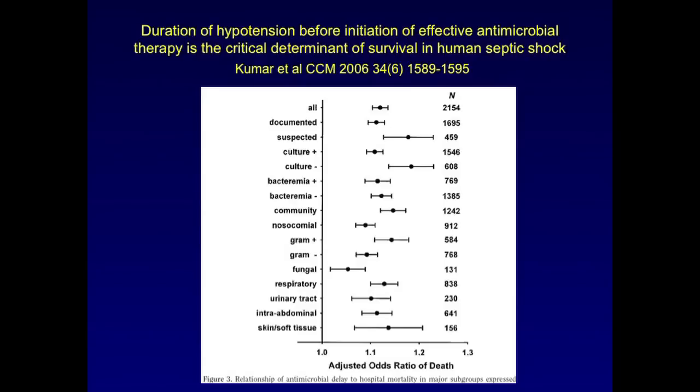In this slide, you're looking at this odds ratio of death. And it doesn't matter if the infection is documented, suspected, culture positive, culture negative, has bacteremia, doesn't have bacteremia. If it comes from the community, if it's nosocomial, if it's a gram-positive infection, gram-negative infection, fungal infection, respiratory infection, urinary tract infection, intra-abdominal infection, or skin or soft tissue infection, the bottom line is the odds ratio of death goes up the longer it takes before starting antibiotics. Next slide, please.